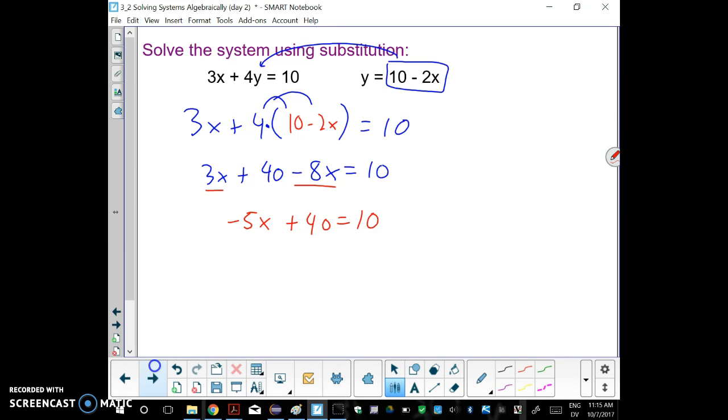Since these x's are on the same side, just combine them. Positive 3 and negative 8 combines to negative 5x. Negative 5x plus 40 equals 10. Now let's just do some more algebra: minus 40 from both sides, negative 5x equals negative 30. Divide by negative 5, x equals 6.